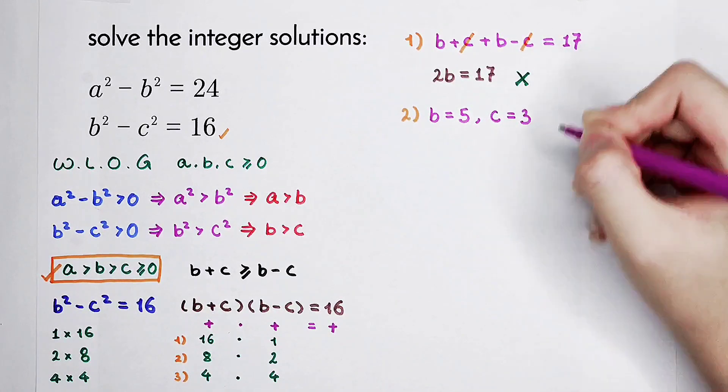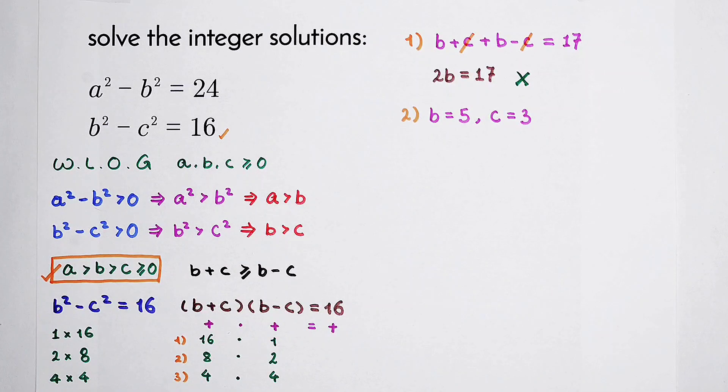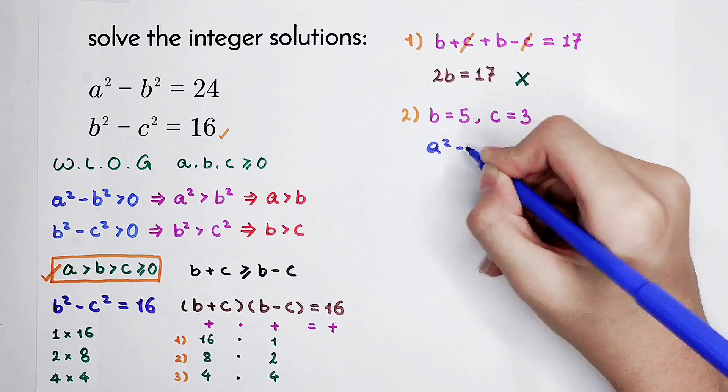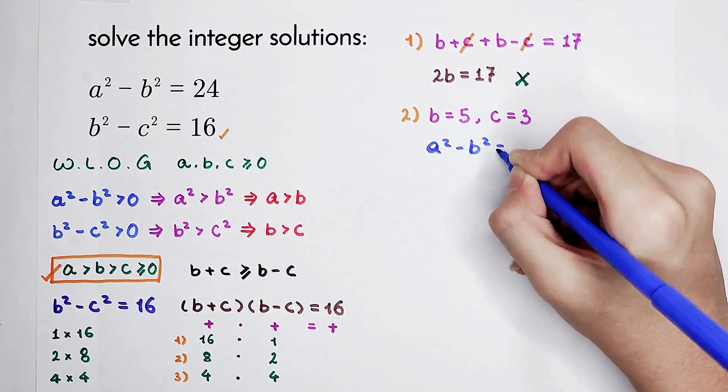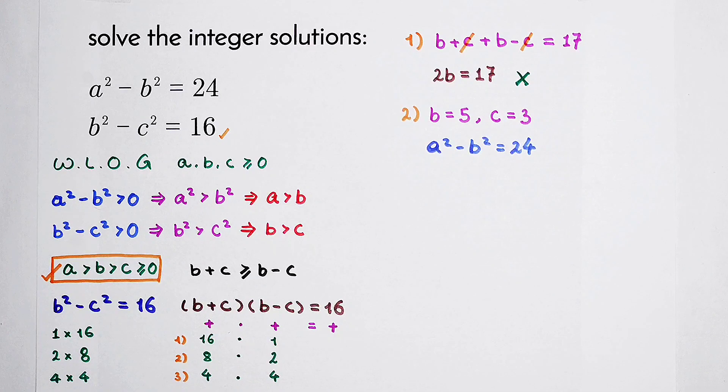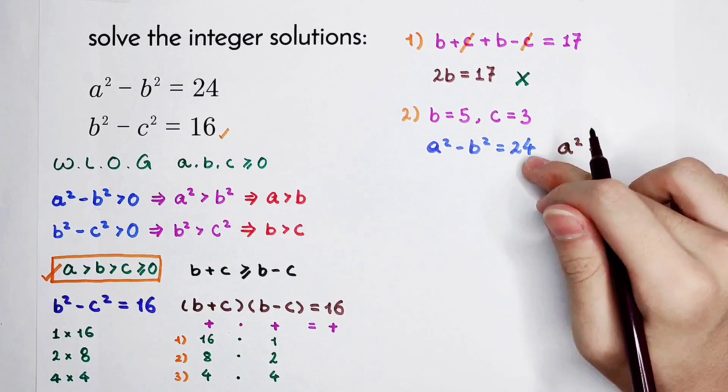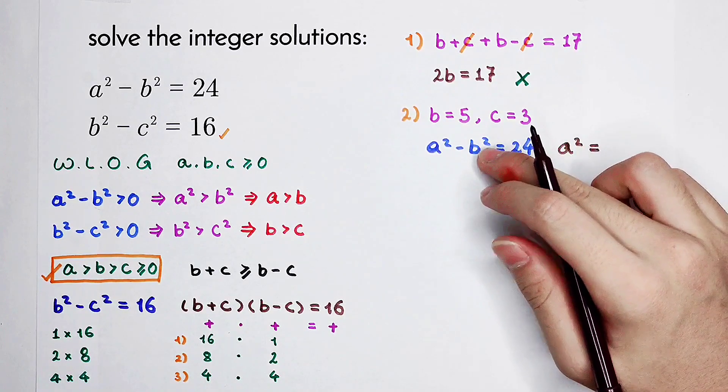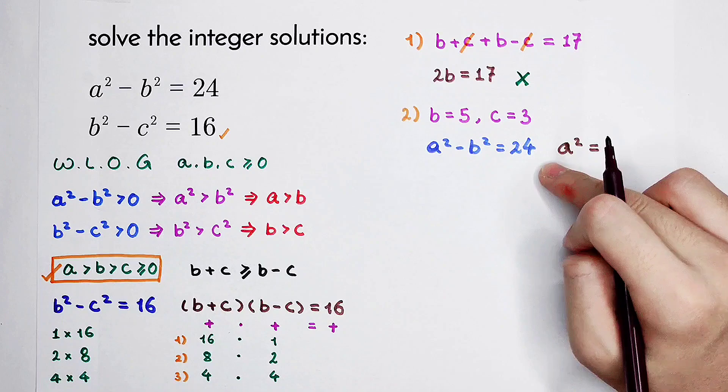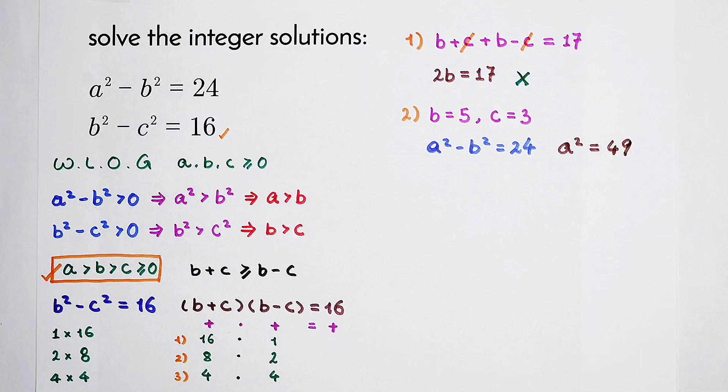Now we have to solve the value of a. A squared minus b squared equals 24. Since b is now 5, a squared equals 24 plus 5 squared, which is 25. 24 plus 25 is 49. So a squared is 49, and a is 7.